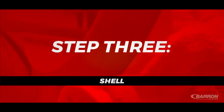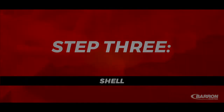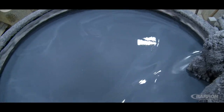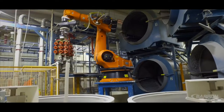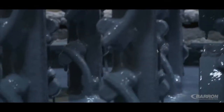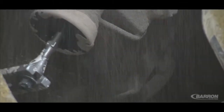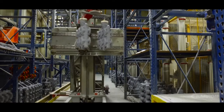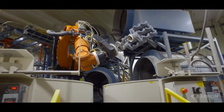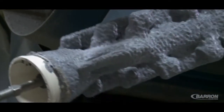Step 3: The wax tree is dipped into a ceramic bath or slurry. Barron's 6-axis dipping robot ensures consistency and uniformity of shell production in intricate and complex parts. After dipping, fine sand or stucco is applied to the wet surface. The mold is allowed to dry and the process is repeated a number of times, resulting in a layered ceramic mold capable of withstanding the stresses of the casting process.